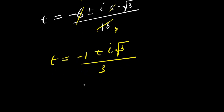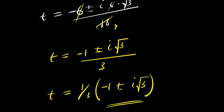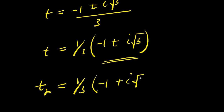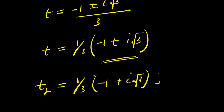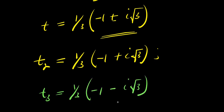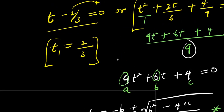So I have two complex solutions for t: t₂ equals 1 over 3 times negative 1 plus i root 3, and t₃ equals 1 over 3 times negative 1 minus i root 3. So these are the two complex solutions, and we have one real solution, which is 2 over 3.